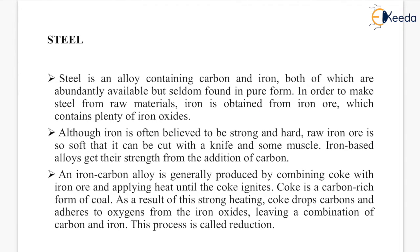Steel is an alloy containing carbon and iron, both of which are evidently available but seldom found in pure form. In order to make steel from raw materials, iron is obtained from iron ore which contains plenty of iron oxides. Although iron is often believed to be strong and hard, raw iron ore is so soft that it can be cut with a knife and some muscle.